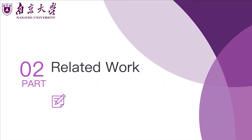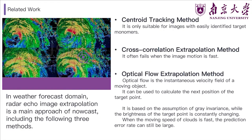I will analyze three traditional ways of cloud prediction in the weather-forecast domain. In the weather-forecast domain, radar-echo-image extrapolation is the main approach of Nowcast. Many typical methods have been proposed, including the centroid tracking method, the cross-correlation extrapolation method, and the optical flow extrapolation method. The core idea of all three methods is to find the corresponding relationship between frames at adjacent times. The centroid tracking method tries to identify monomers and then scans images at adjacent times to match and track target monomers. However, this algorithm is only suitable for images with easily identified target monomers. As the target monomers on most cloud images are complex and hard to identify, the centroid tracking method has limitations on our cloud prediction.